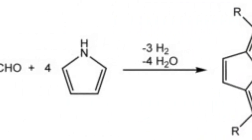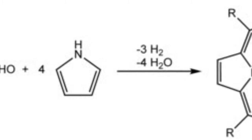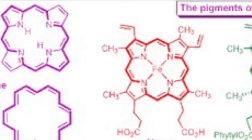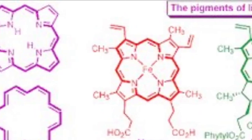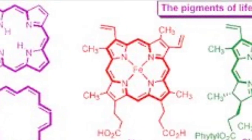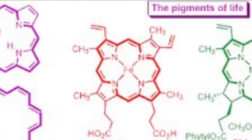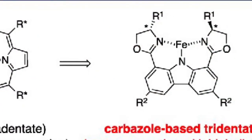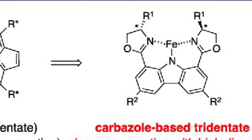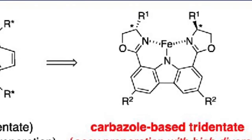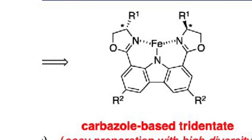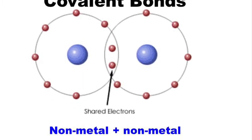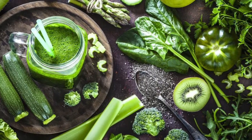First things first, let's start off with porphyrins. Some examples include chlorophyll and hemoglobin. Their structure contains four heterocyclic rings, all of which contain carbon and nitrogen. Carbon atom bridges connect the whole thing, and the ring can also act as a ligand — they form chelates with metal through coordinate covalent bonds.